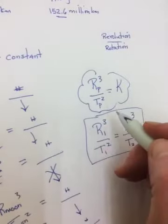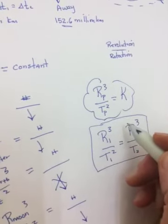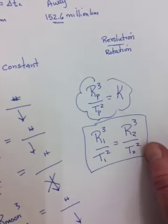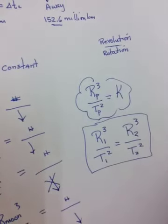Thing was, he proved it with the data, but he didn't know why. It took Isaac Newton to explain the why. Remember, Kepler was only a mathematician. So he couldn't get the physics behind it. But Newton did.